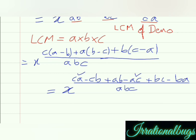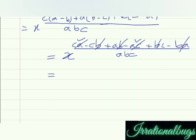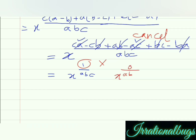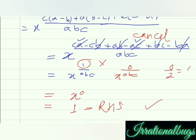Bracket के बाहर जो-जो term थी हम अंदर multiply करते गए हैं. Now, एक positive ca है, एक negative ac है — दोनों आपस में cancel. cb and bc cancel. ab and negative ba cancel. इसे solve करने के बाद maximum बच्चे x raised to the power 1 upon abc लिख देते हैं. But अगर हम देखें तो numerator पूरा ही cancel हो चुका है — that means 1 की जगह हमें 0 use करना पड़ेगा. So, x raised to the power 0 upon abc. Now, 0 upon abc का answer 0 हो जाएगा. So x raised to the power 0 which is equals to 1, equals to RHS. यह याद रखना है — 0 upon 2 का answer 0 आता है, but इसका reverse 2 upon 0 तो वो infinite होता है.